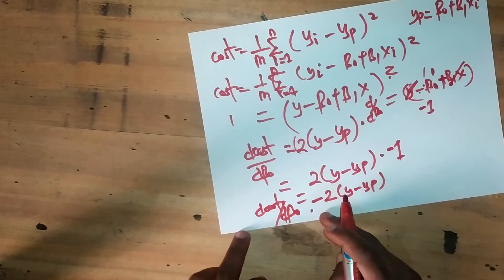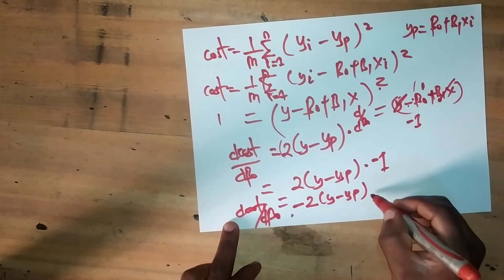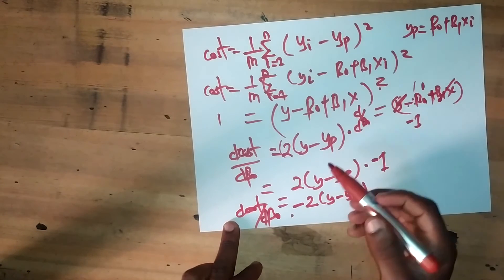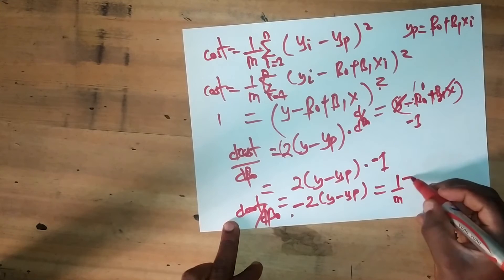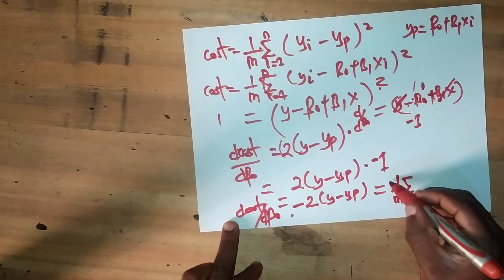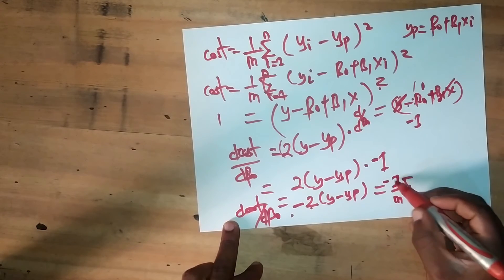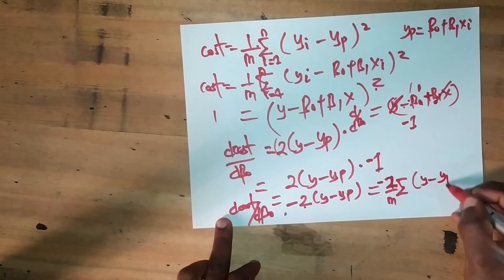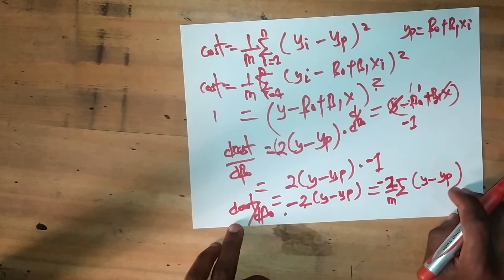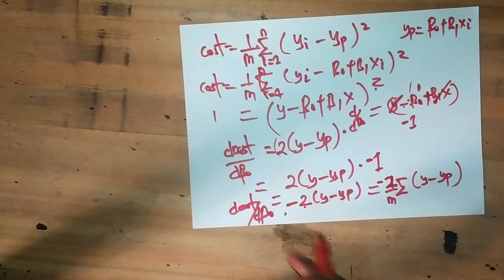In order to find the derivative of cost for the whole dataset, we add the summation back. So it will be (1/n) summation of −2(y − ŷ), which simplifies to (−2/n) summation of (y minus y predicted). This is our final equation for the derivative of the cost function with respect to β₀.